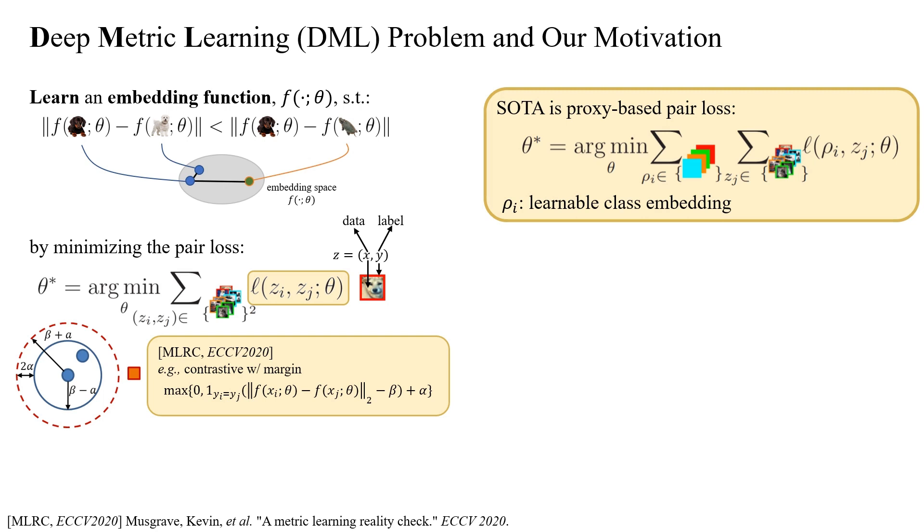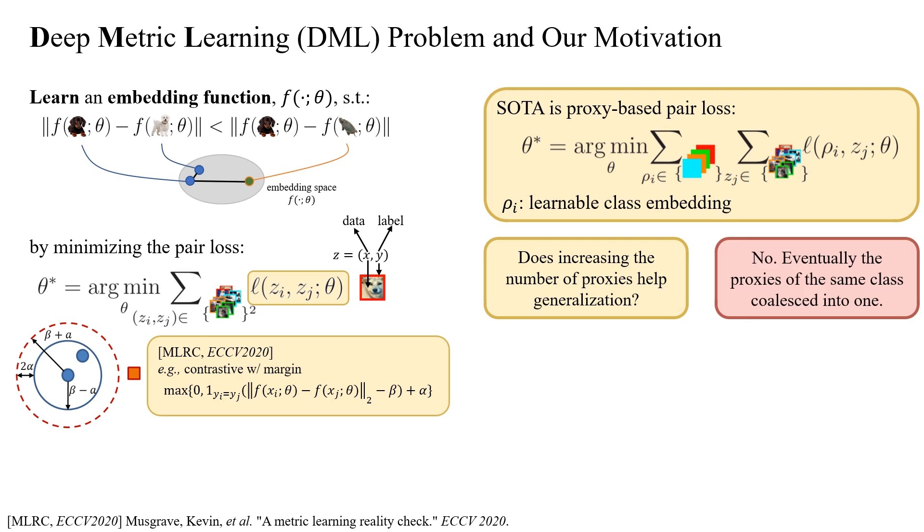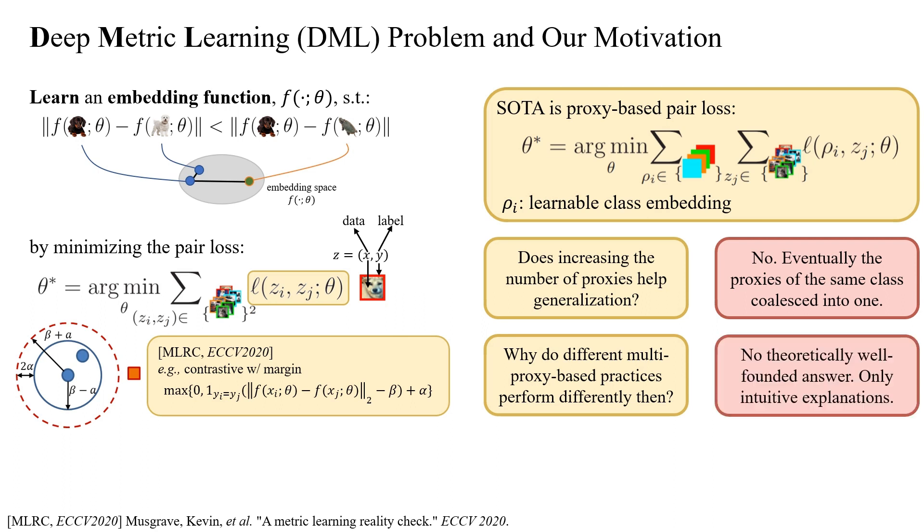A common question arises: can we improve generalization by increasing the number of proxies per class? Surprisingly, the answer is no, as eventually proxies of the same class coalesce into one. But then, why do different multi-proxy-based practices yield different results? Unfortunately, there is no theoretically well-founded answer, only intuitive explanations.